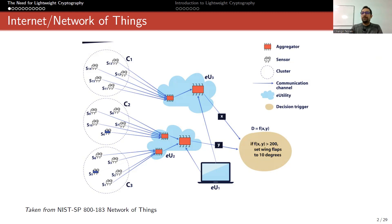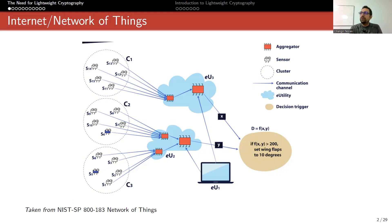I like the definition of NIST. This picture is actually taken from the NIST special publication 800-183, 'Network of Things.' Instead of 'Internet of Things' they prefer to use 'Network of Things,' which is an even larger term because not always all of these devices are connected to the internet.